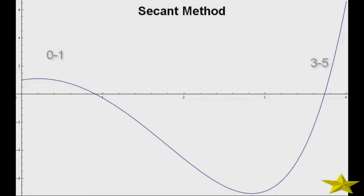Hi, welcome to Maths and Tricks. Today we're going to talk about the secant method. A secant is a line that joins two points on a curve. In this case, we have two initial points, x0 and x1.